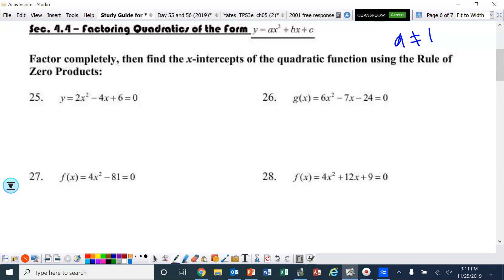So number 25, we're going to factor this, but always remember to first check to see, can you pull out a GCF? And if we look at number 25, I see 2x squared minus 4x plus 6. Well, 2, 4, and 6 definitely have a common factor. And the greatest common factor for that would be 2.